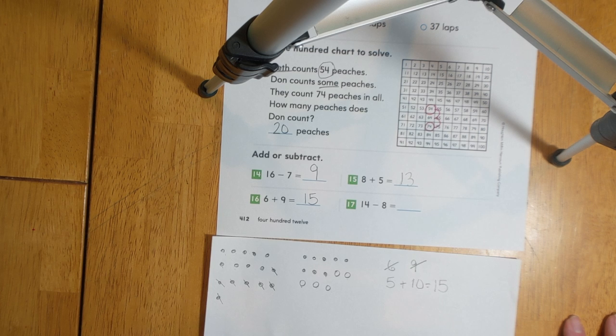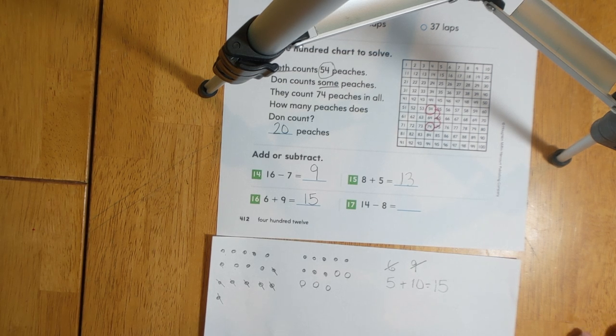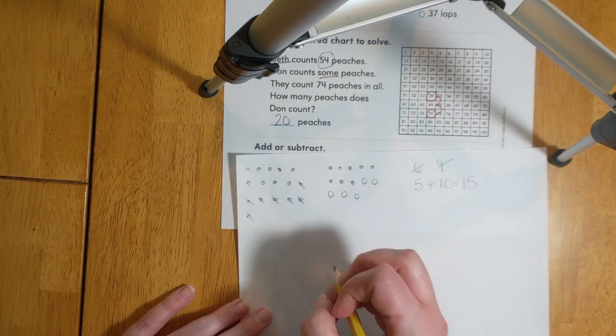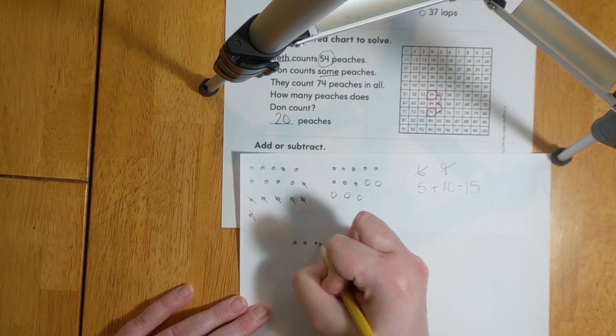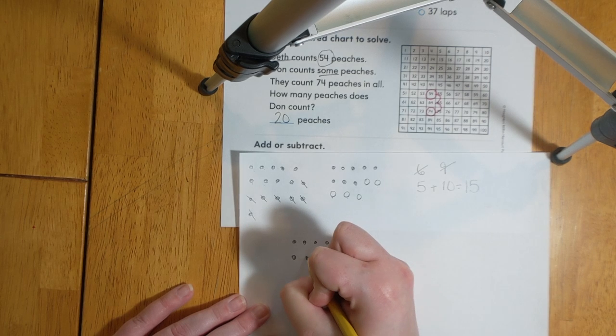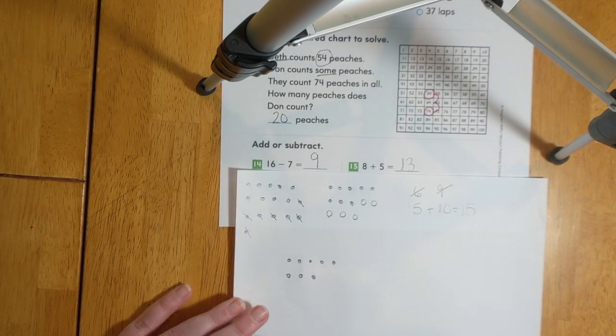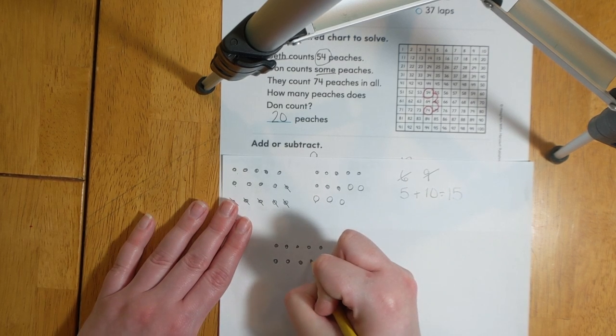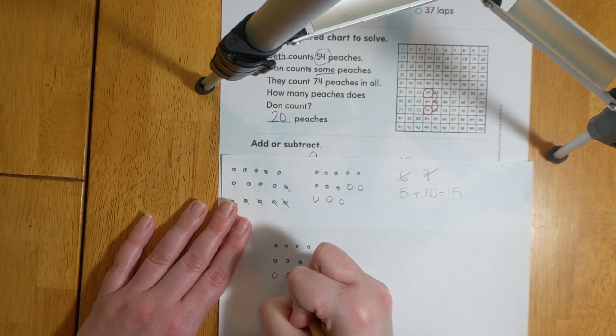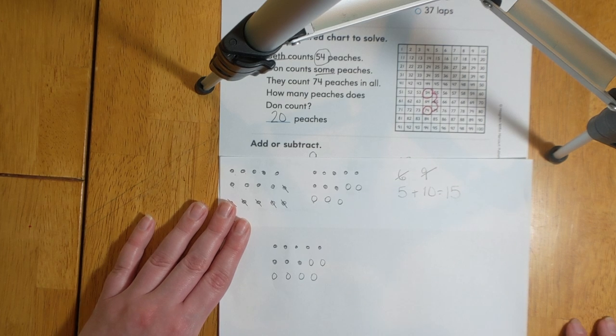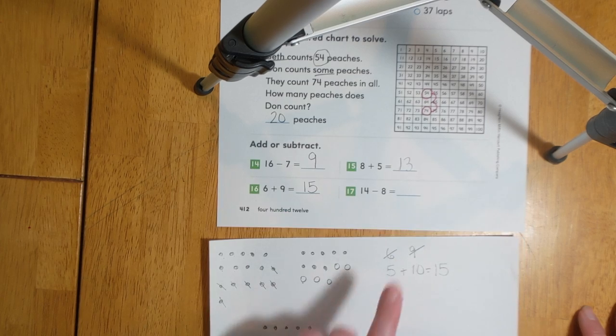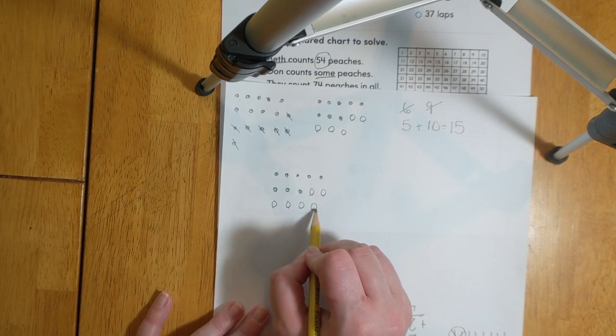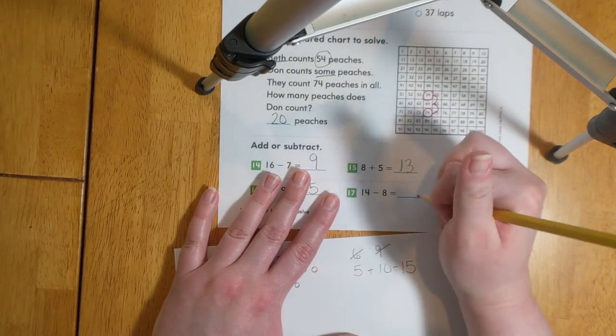For number 14, we can count on to help us find the sum of this subtraction problem. Our numbers are 14 and 8. Let's start by drawing 8 circles. Then I can count on until I get to the number 14. So we have 8, 9, 10, 11, 12, 13, 14. I can count how many circles I just added to find the sum. 1, 2, 3, 4, 5, 6. 14 minus 8 equals 6.